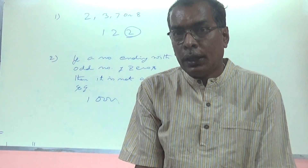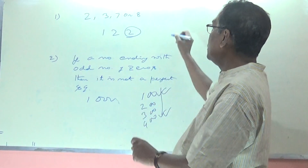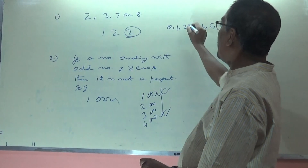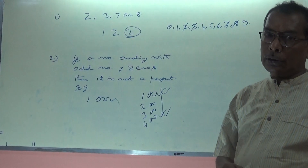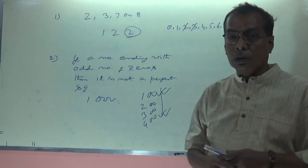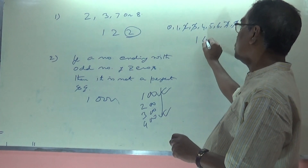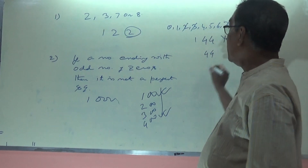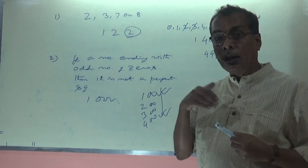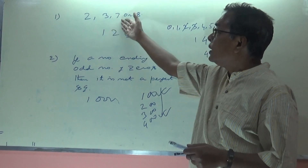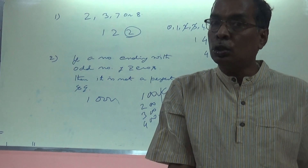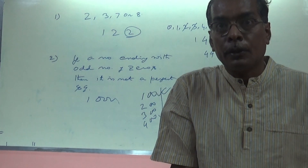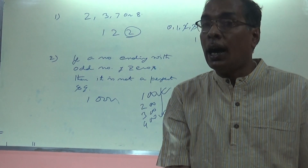If a number ends with an odd number of zeros, no need to verify — it is not a perfect square. Similarly, from rule one, if a number ends with 2, 3, 7, or 8, it is not a perfect square. We have digits 0 through 9. If a number ends with 2, 3, 7, or 8, it is not a perfect square. For example, 144 ends with 4 and is a perfect square, but 44 is not. So if a number ends with 1, 4, 5, 6, 9, or 0, it may or may not be a perfect square — verification by prime factorization is required.